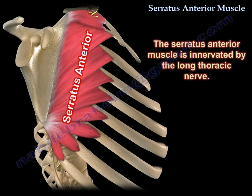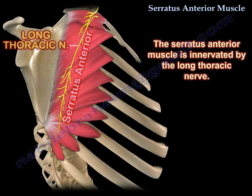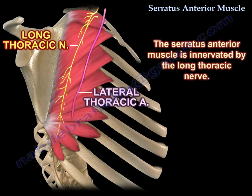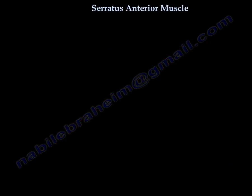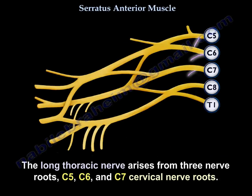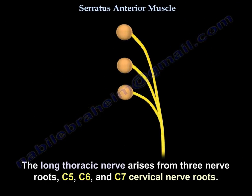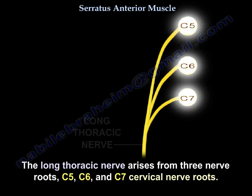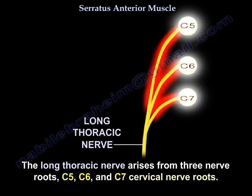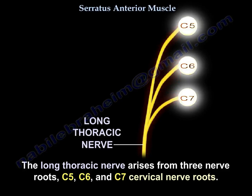The serratus anterior muscle is innervated by the long thoracic nerve. The long thoracic nerve arises from three cervical nerve roots: C5, C6, and C7. Here is a diagram representing the long thoracic nerve and its origin from these three nerve roots.